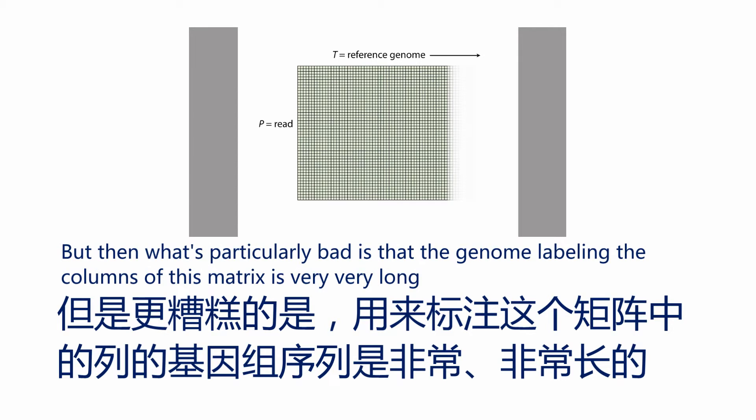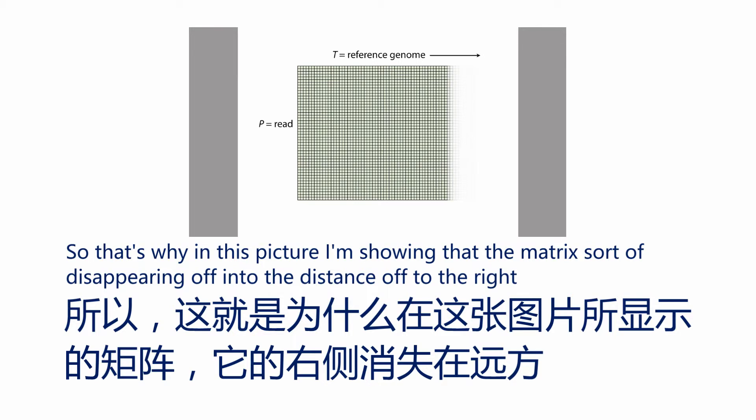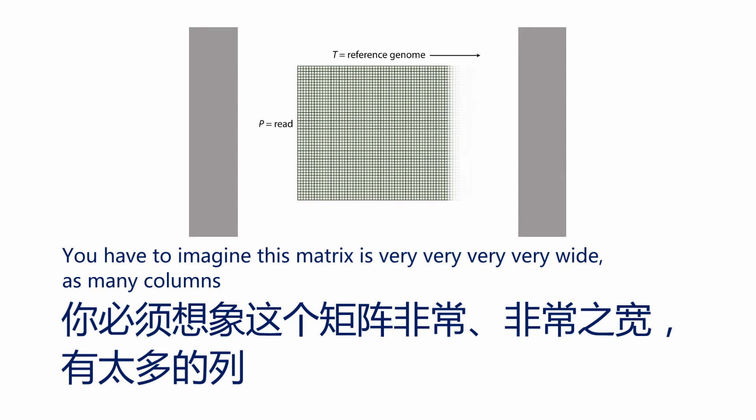But what's particularly bad is that the genome labeling the columns of this matrix is very, very long. For example, the human reference genome is about 3 billion bases long. That's why in this picture I'm showing the matrix sort of disappearing off into the distance. You have to imagine this matrix is very, very wide with many columns.